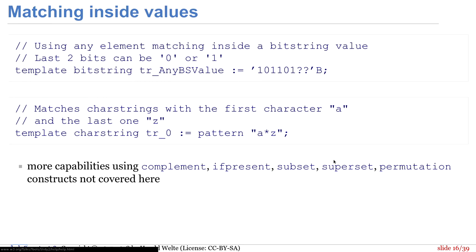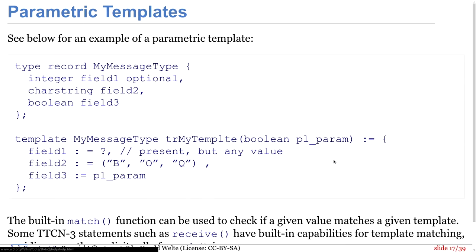Bei Bit-String-Templates kann man sagen, die ersten Bits müssen so sein, aber zwei Bits markiert man mit Fragezeichen – die können beliebige Werte haben, müssen aber vorhanden sein. Mit Sternchen wäre es optional und könnte kürzer sein. Bei Character-Strings kann man mit Patterns arbeiten: der String muss mit A anfangen und mit Z aufhören. Es gibt fortgeschrittene Möglichkeiten mit Subsets, Supersets und Permutationen. Es ist sehr deklaratives Programmieren – man sagt, was zulässig ist, nicht wie es geprüft wird.